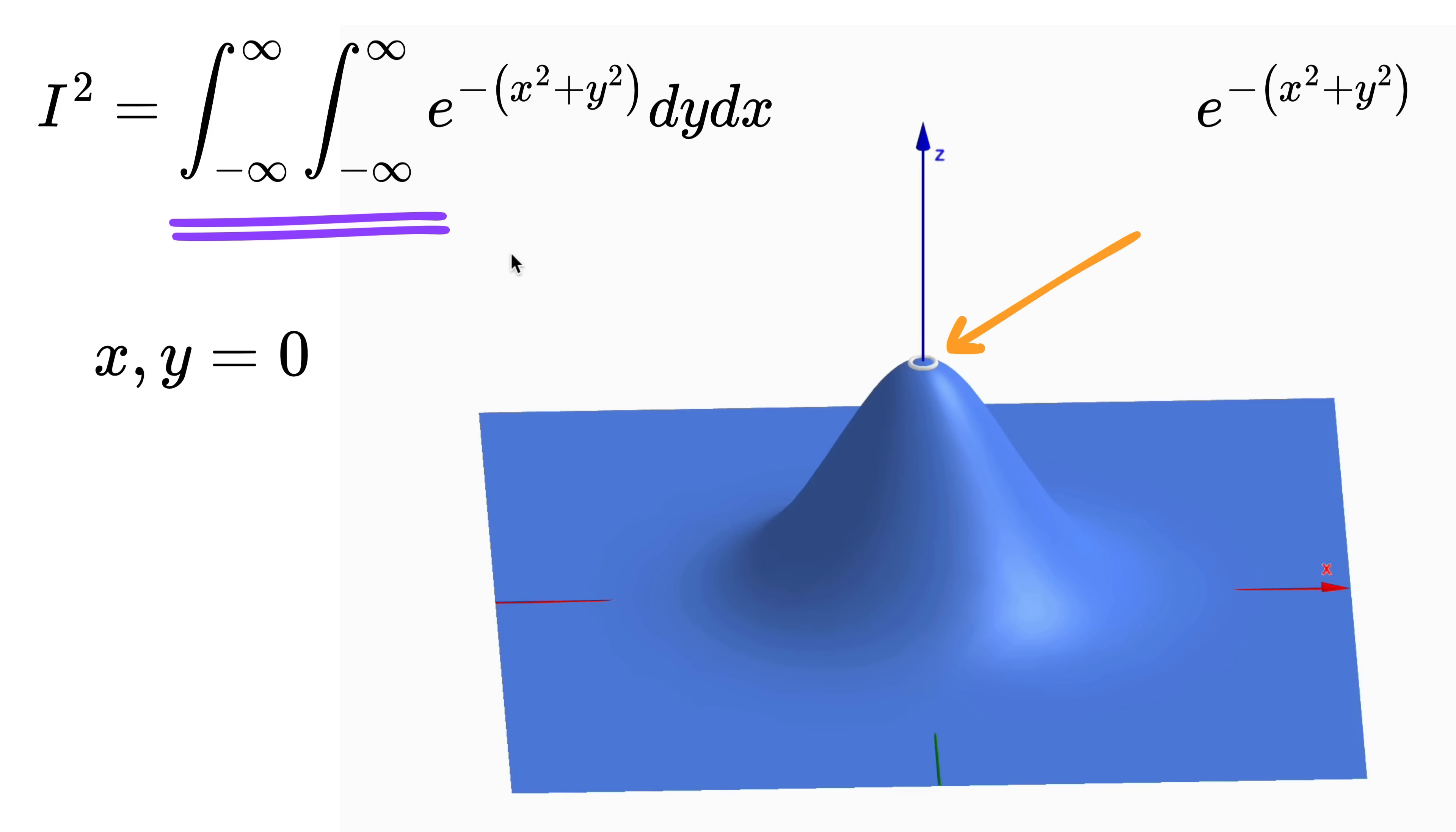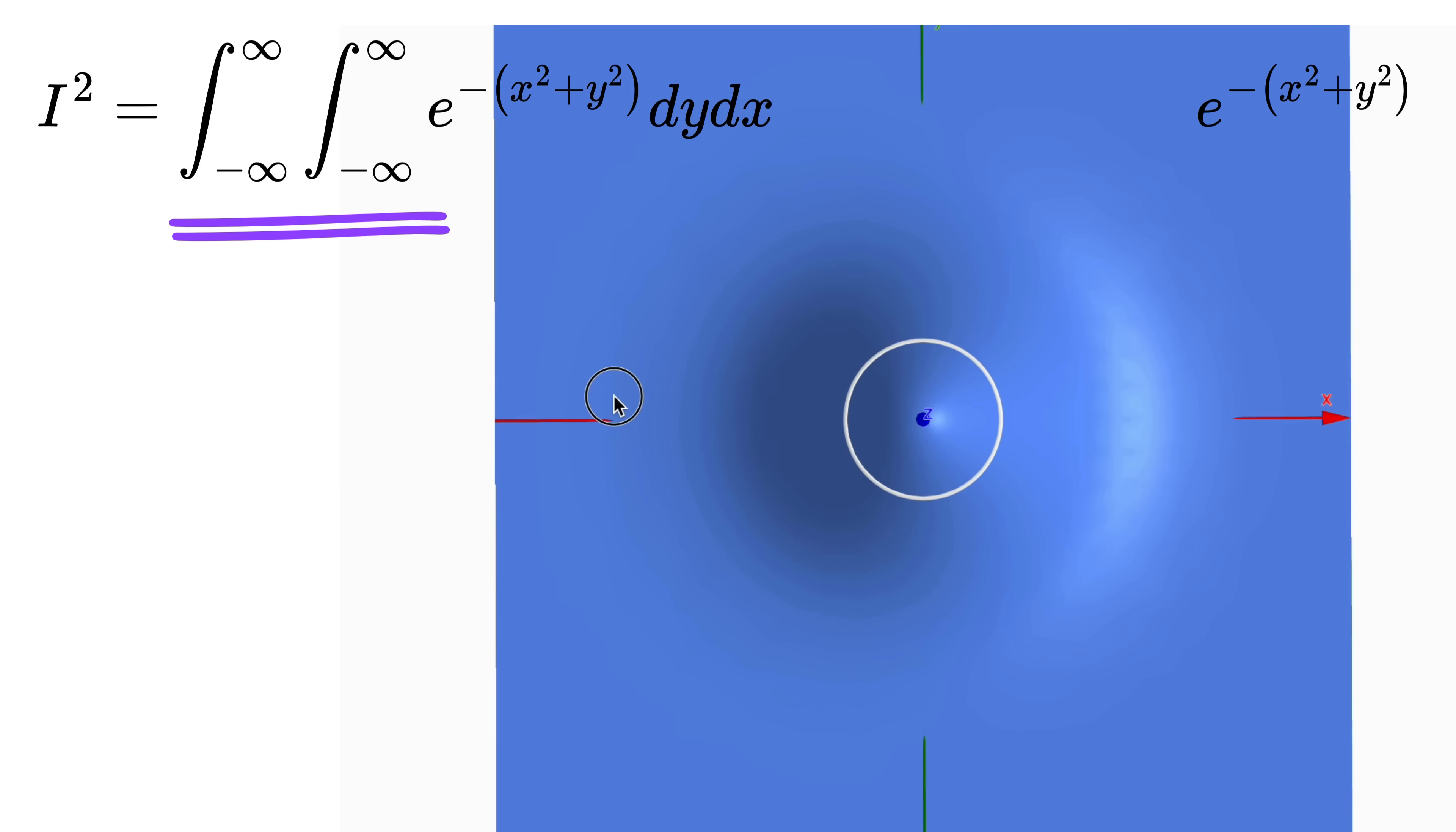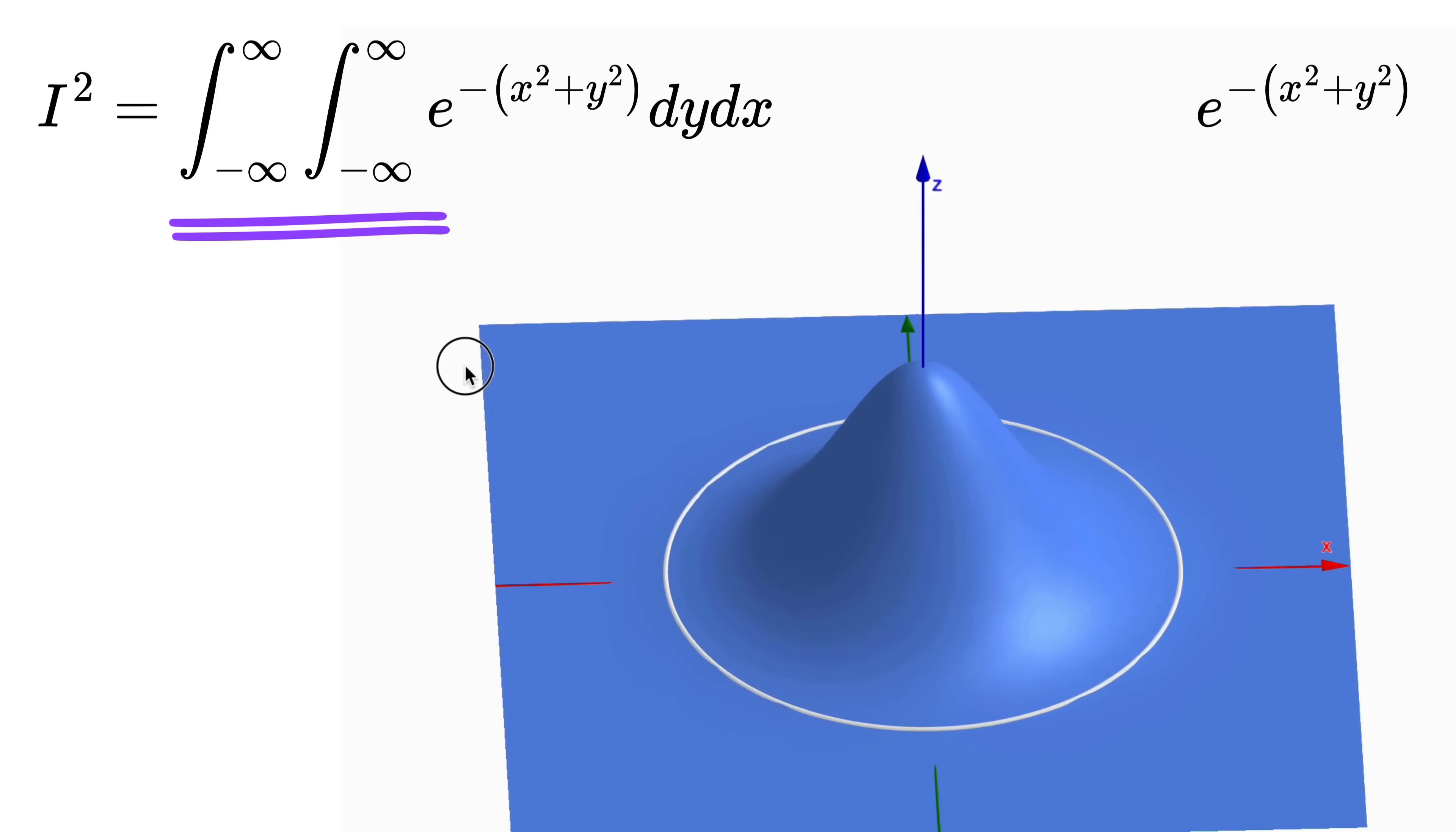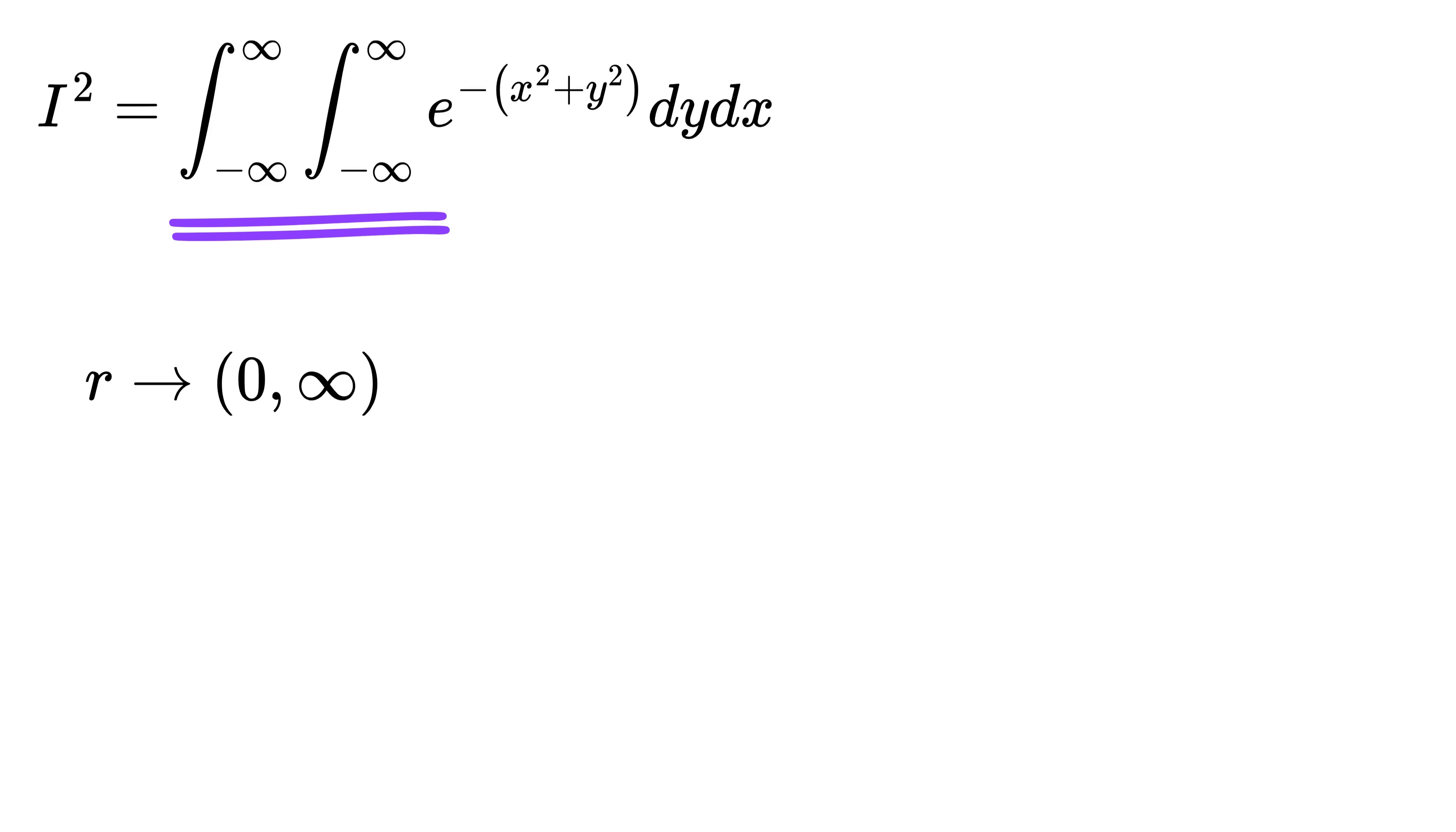Now, if x and y are zero, we get this circle at the top where r is zero. For some value of x and y, we get this circle whose radius is infinite. So r goes from zero to infinite. Now, here comes the second magic.